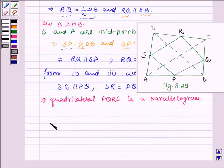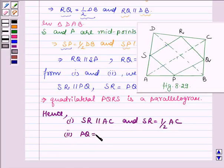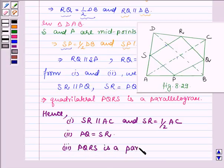Hence we have shown that: first, SR is parallel to AC and SR is equal to half of AC; second, PQ is equal to SR; and third, PQRS is a parallelogram. So this completes the session. Take care and have a good day.